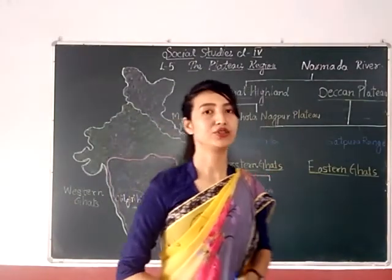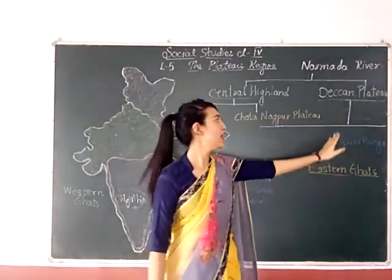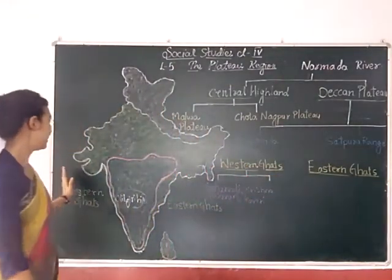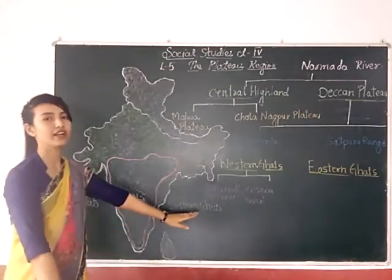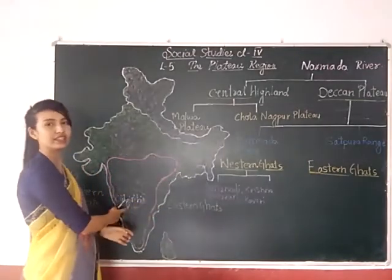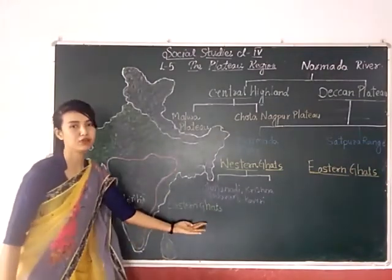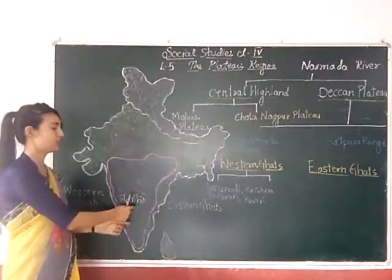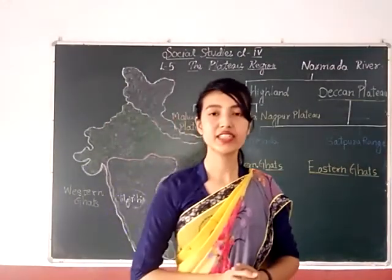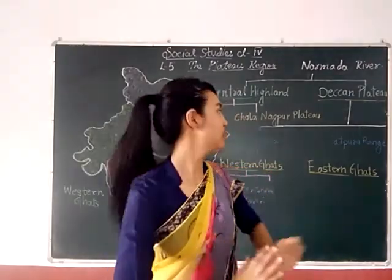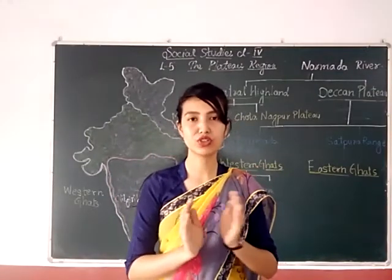Now see the Deccan Plateau. The Deccan Plateau is flanked by the Western Ghats and Eastern Ghats. These two ghats meet each other at the Nilgiris. These two are coastal areas — coastal areas which are found along the Western Ghats and Eastern Ghats. The Eastern Ghats are broken into small hills and have been divided into smaller ranges.